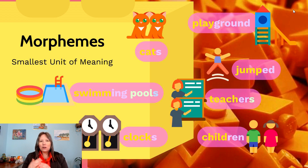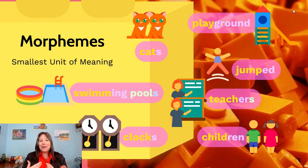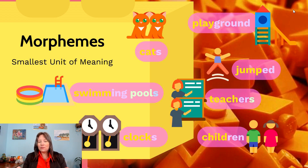The word 'clock' only has one morpheme because we don't break it into 'lock' — that would change the meaning. But 'clocks' has two morphemes; the 's' is not a word in itself, but it's a morpheme telling us there's a plural. Many morphemes are grammatical, telling us about plural or verb tense. 'Jumped' has an 'ed' telling us it's past tense, and 'jumping' has 'ing' telling us it's currently happening. A phrase like 'swimming pools' actually has four separate morphemes.